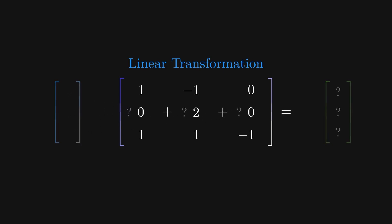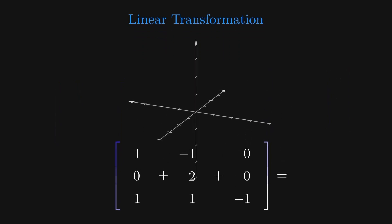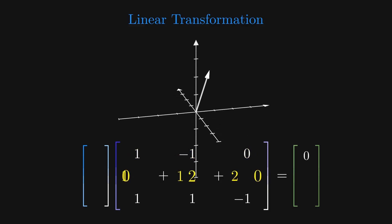We can see how this works in practice in 3D. Say we want to input the vector 1, 1, 2 to our transformation. Well, after scaling and summing each row, we see we get the vector 0, 2, 0. So our transformation takes 1, 1, 2 to 0, 2, 0.